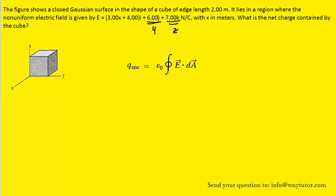When the electric field is constant, the flux in that particular direction will turn out to be zero. Coming back to the Gaussian surface, let's consider the y-direction first. There are two surfaces in the y-direction: the right face and a corresponding left face. The electric field in the y-direction has a constant value of positive 6, so we draw an electric field vector pointing in the positive y-direction. That field enters the left face and exits the right face of the cube.